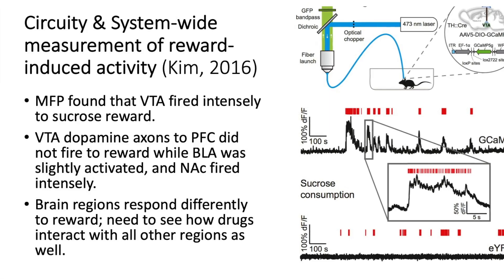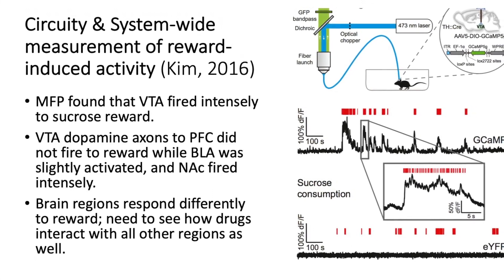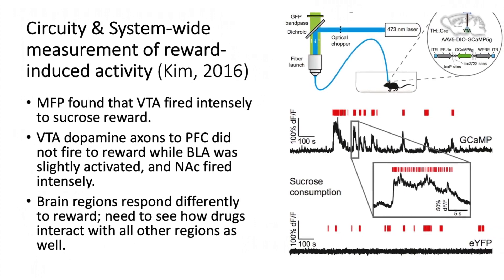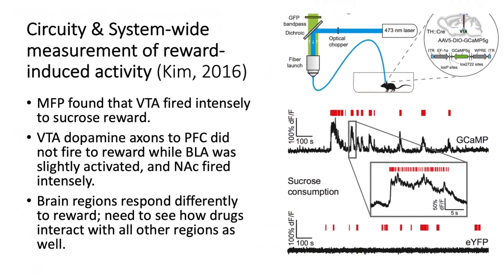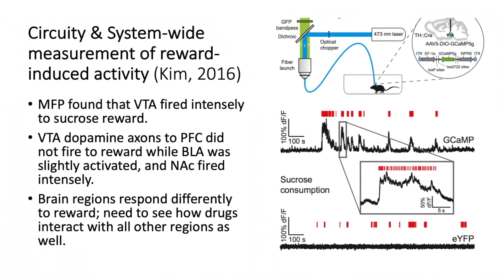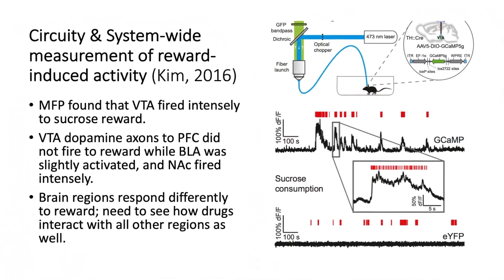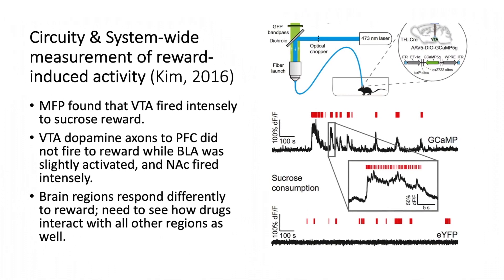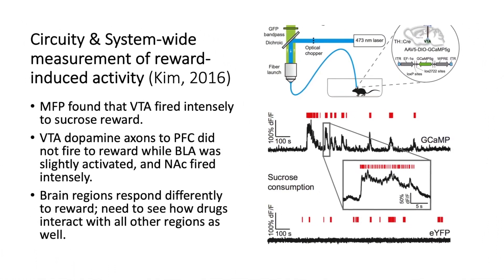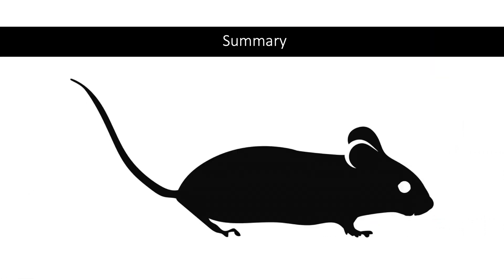Kim 2016 conducted a study on circuitry and system-wide measurement of reward-induced activity using multi-fiber photometry. It was found that the ventral tegmental area fired intensely to sucrose reward. The VTA dopamine axons to PFC did not fire to the reward, while in the basolateral amygdala it was slightly activated and the nucleus accumbens fired intensely. Brain regions responded differently to reward, and one needs to see how drugs interact with all other regions as well.